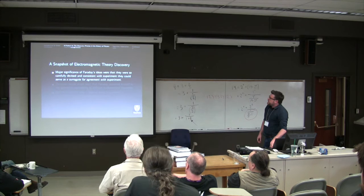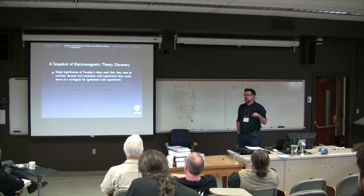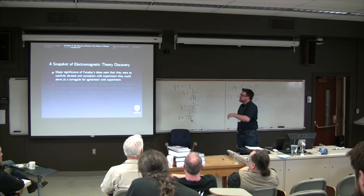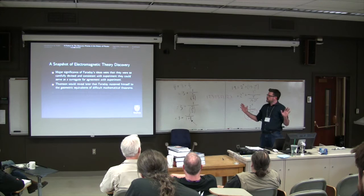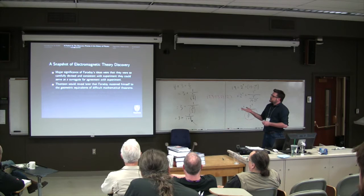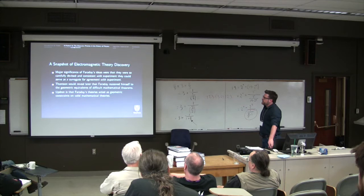Okay. So, the major significance of Faraday's idea is that they were so carefully devised and consistent with the experiment. They could serve as a surrogate for agreement with the experiment. So, if you could recover Faraday's theories, you know your theory is going to agree with the experiment. And interestingly, Thomson would later reveal that Faraday actually—so, Faraday, someone who has no mathematical training. He was self-taught. Didn't know mathematics. Through this way of developing theories, reasoned himself to the geometric equivalence of difficult mathematical theorems which Thomson was able to prove rigorously later on. So, it's quite remarkable. So, the upshot then is that Faraday's theories act as geometric constraints on a valid mathematical theory of electromagnetism.